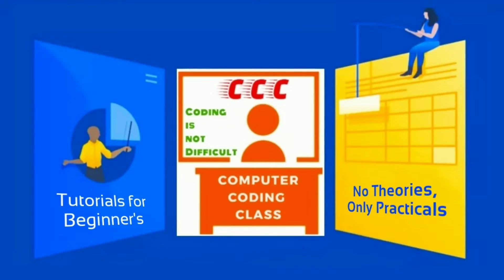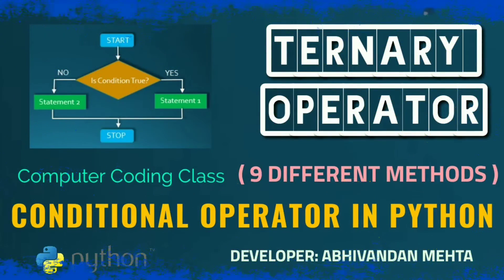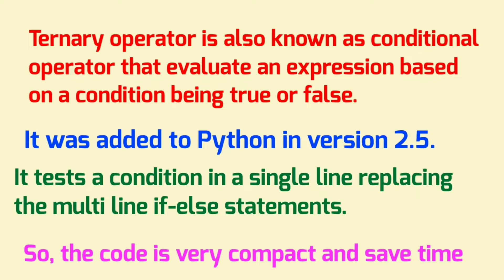Welcome, you are attending computer coding class. Today we will learn how to use the ternary operator in Python. The ternary operator is also known as a conditional operator that evaluates an expression based on a condition being true or false. It was added in Python version 2.5. The benefit of this operator is that in place of multi-line if-else statements, we will write a single-line statement.